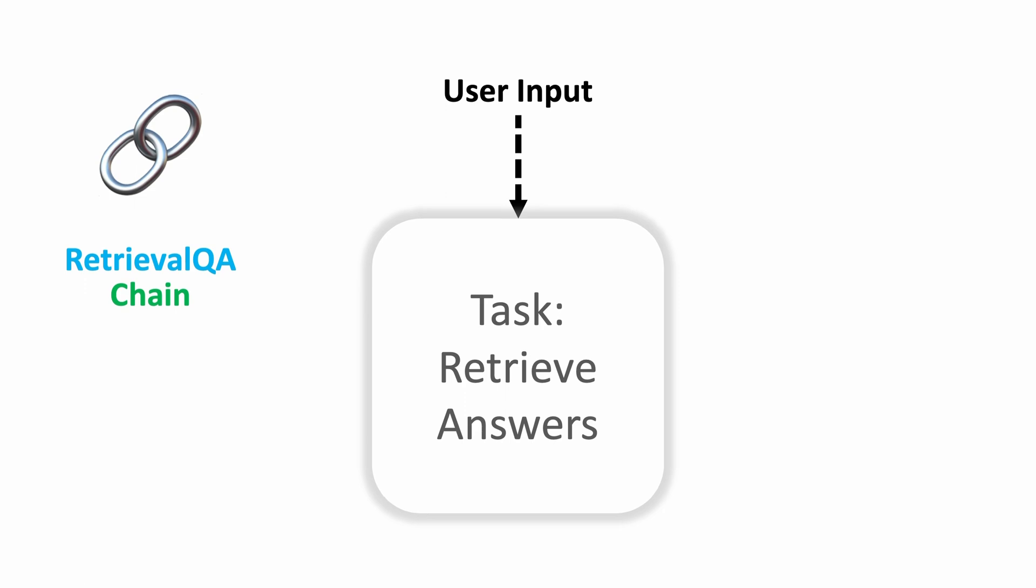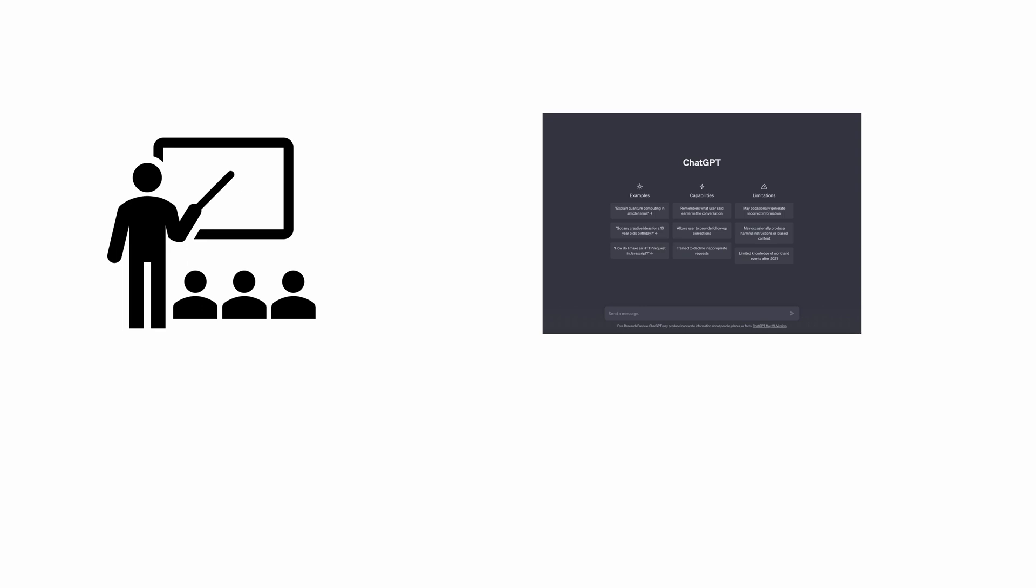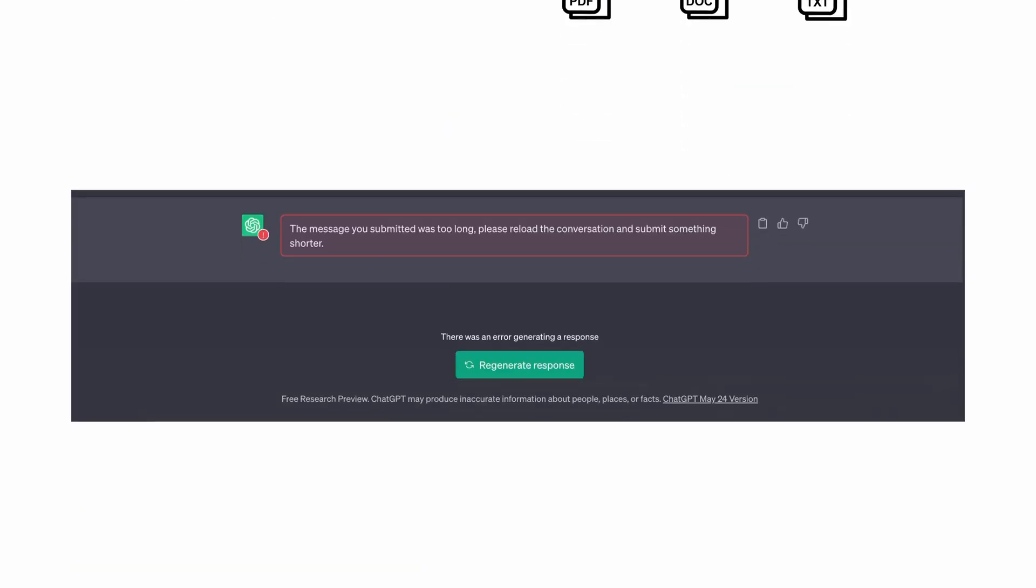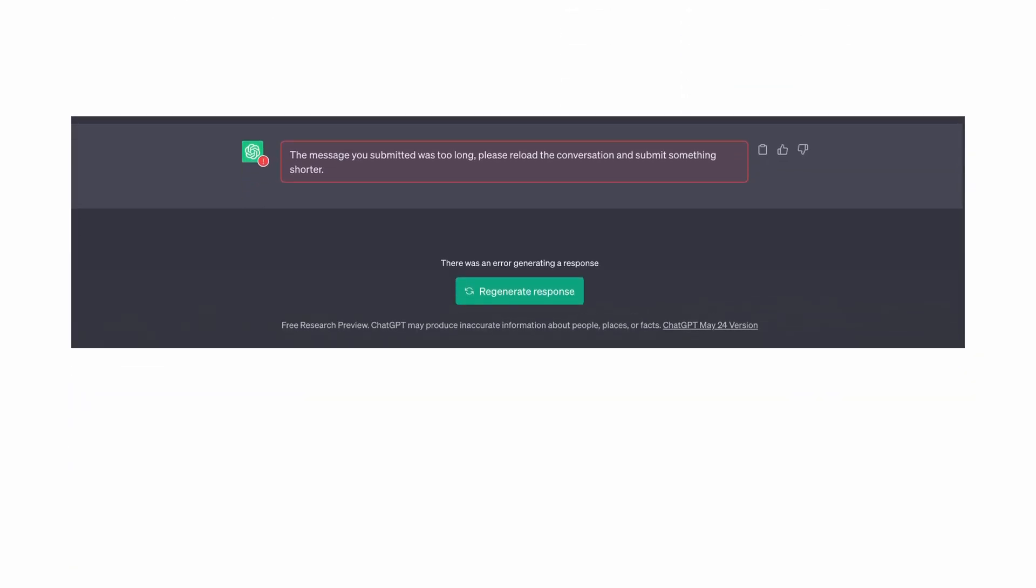Now question answering chains have a special place in the Langchain library. So I would like to expand on this a little more. Let's go back to our example where now we want our students to use ChatGPT to answer questions or search from entire books. So if they were to copy the text from these books and paste in ChatGPT, most likely they'll get an error like this which says that it was too long for ChatGPT to process and give answer.